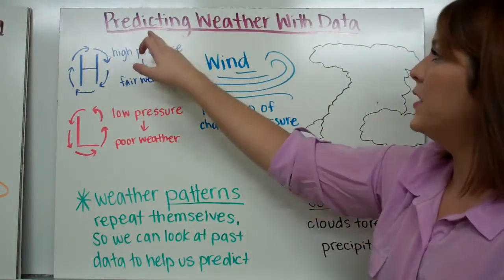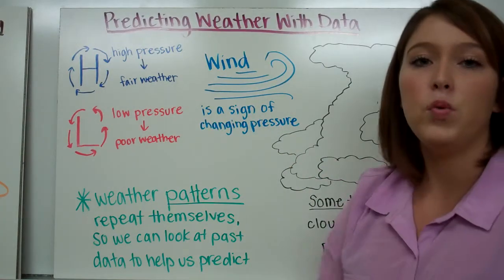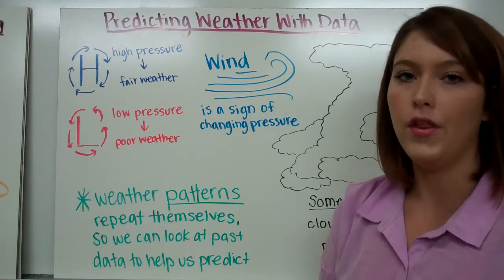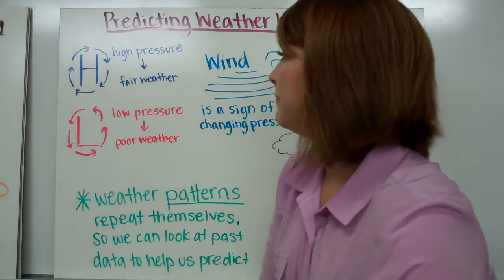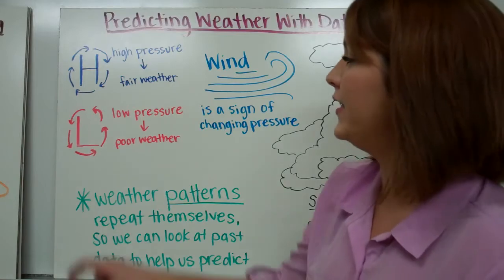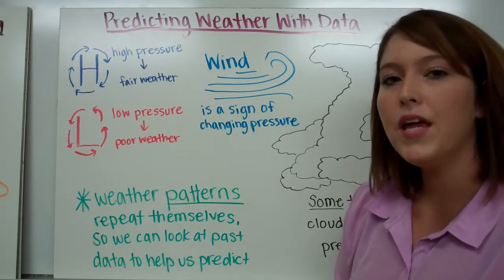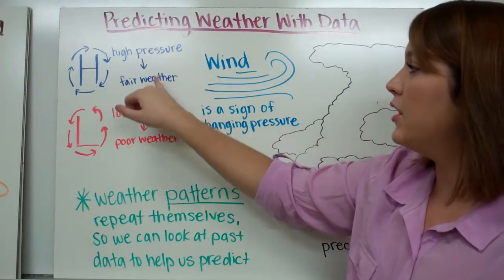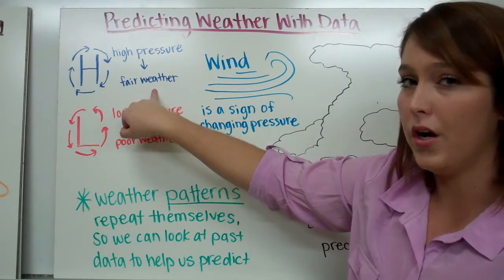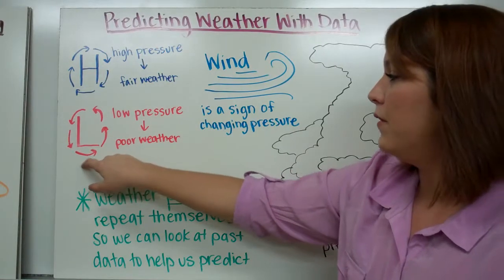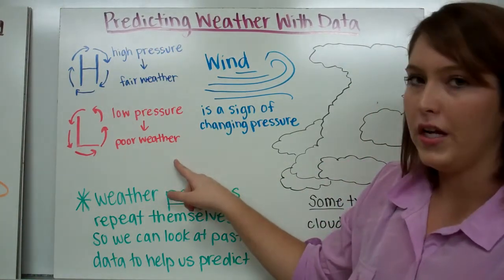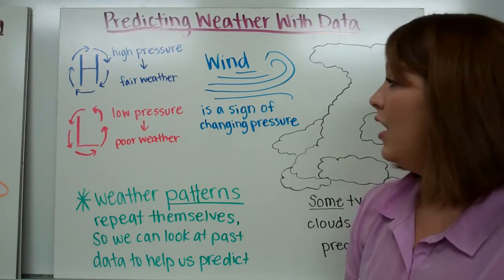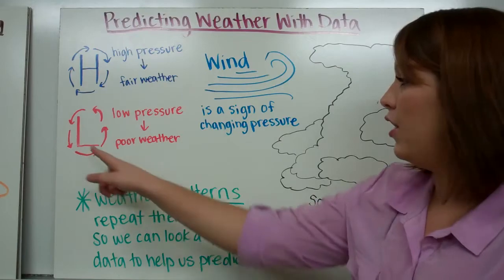We use data to predict weather. We put it all together and try to predict or forecast the weather that we will experience in the near future. Some ways that we can do that are considering high and low pressure areas. When we view pressure areas that are high in pressure, that usually means that fair weather will occur. If you have low pressure areas, they're usually associated with poor weather. You might get rain, thunderstorms, lightning, things like that with low pressure areas.